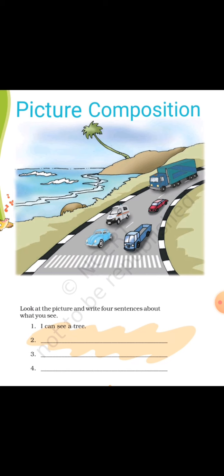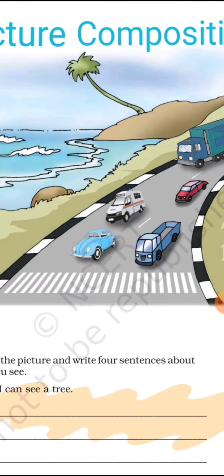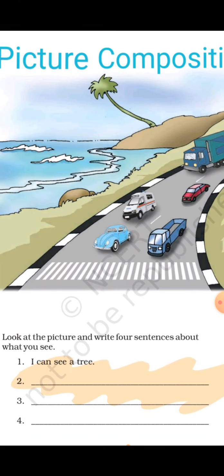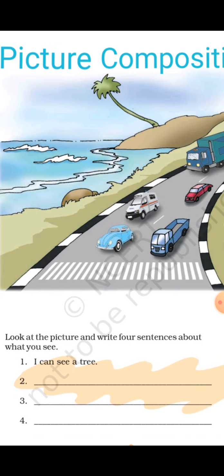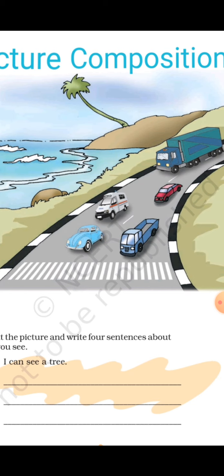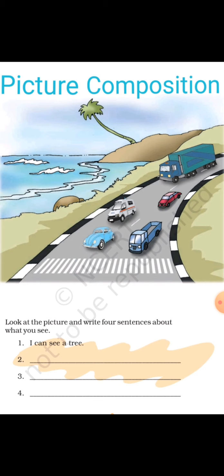First of all, we will discuss the topic picture composition. As you all are very much familiar with the word picture — a beautiful picture is there in front of us. Some vehicles are there, a beautiful road is there, the seashore is there, a very slanting little coconut tree or palm tree is there. Stones are there, and a zebra crossing is also there on the road. This is the picture that we all are watching.